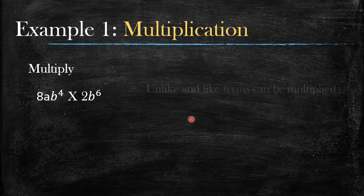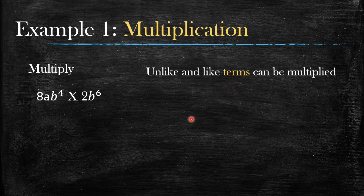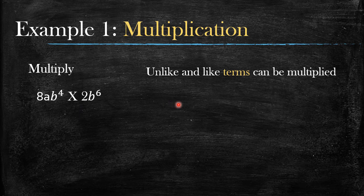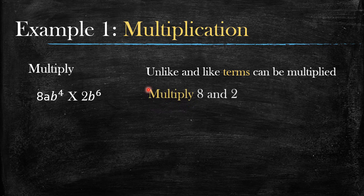I want you to bear one thing in mind: in multiplication, unlike and like terms can be multiplied. This is different from addition and subtraction, where only like terms can be added or subtracted.